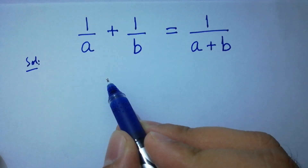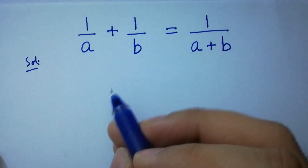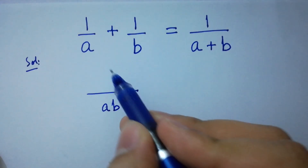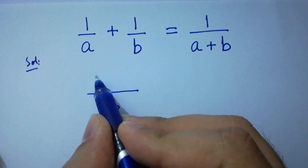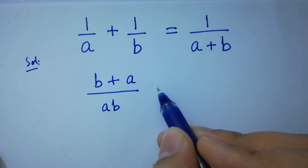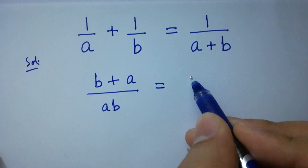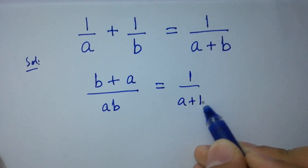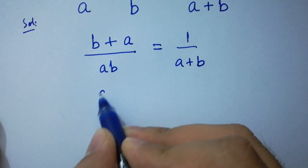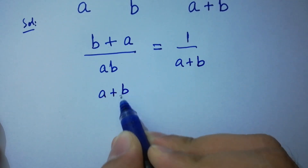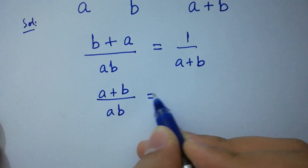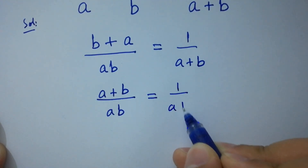On the left hand side, we can take LCM as a times b. So b times 1 gives b, plus a times 1 gives a, equal to 1 over a plus b. This is the same as a plus b over ab equal to 1 over a plus b.